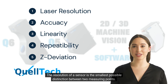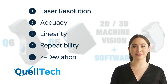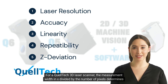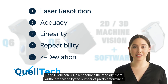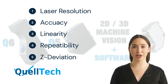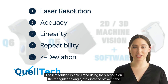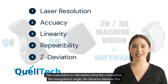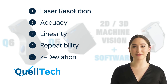The resolution of a sensor is the smallest possible distinction between two measuring points. For a Qualtech 3D laser scanner, the measurement width in x divided by the number of pixels determines the x-resolution. The z-resolution is calculated using the x-resolution, the triangulation angle, the distance between the transmitter and receiver, and the Schimpflug angle.